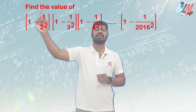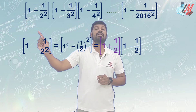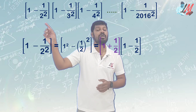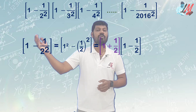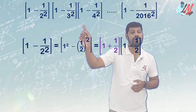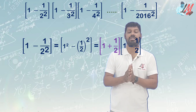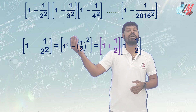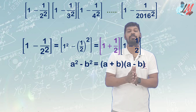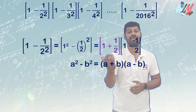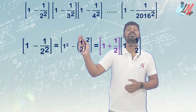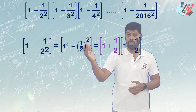What we will do here is: we have (1 minus 1/2 squared). We can write 1 as 1/1 squared, so we have (1 squared minus 1/2 whole squared). This is of the form a squared minus b squared, which equals a plus b into a minus b. So (1 minus 1/2 squared) becomes (1 plus 1/2) into (1 minus 1/2).